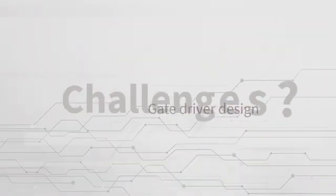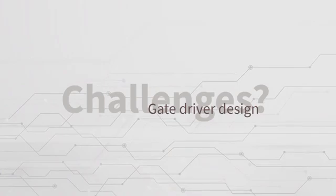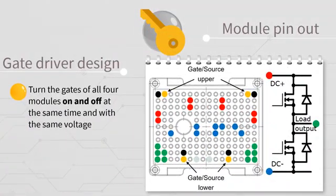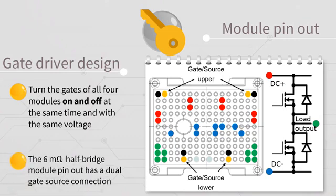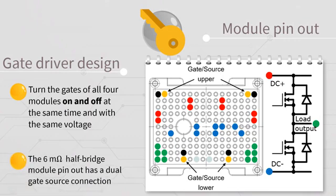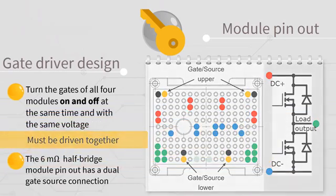What are the design challenges for the gate driver circuit? It is key to turn on each gate at the same time and with the same voltage. The 6-milli-ohm half-bridge module pinout has a dual gate source connection. These must be driven together.